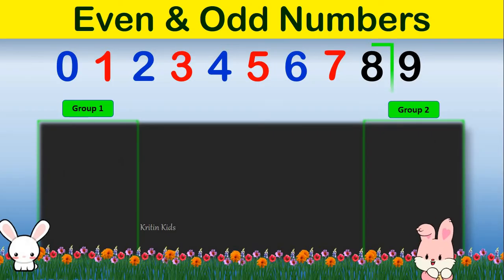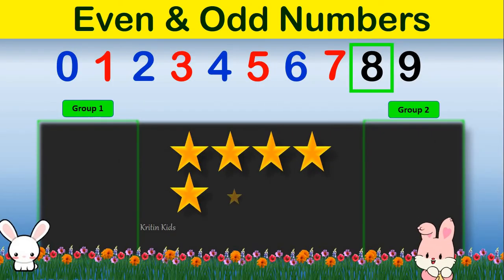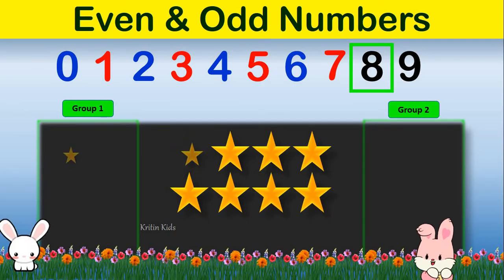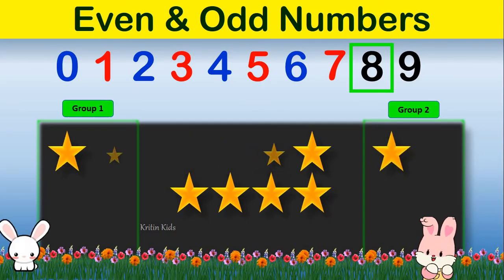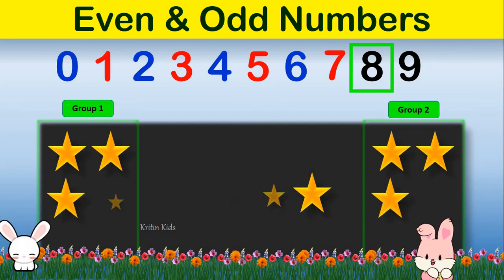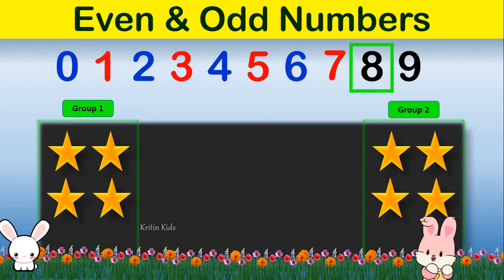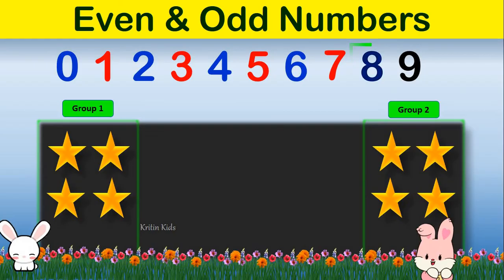Let's go for the next number, that is number 8. When we divide number 8 between 2 groups, you can see both the groups have the same number of items, that is 4. So we can say number 8 is an even number.